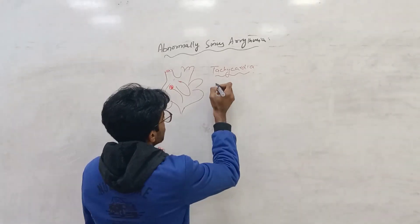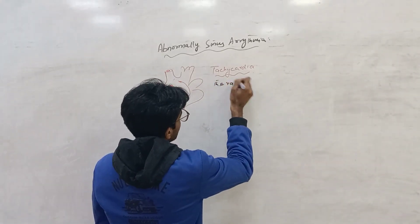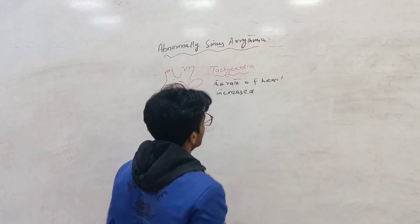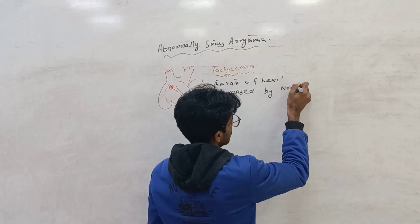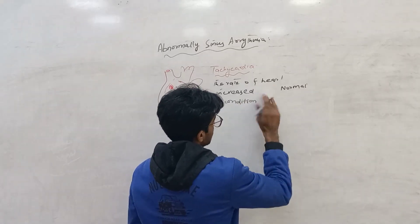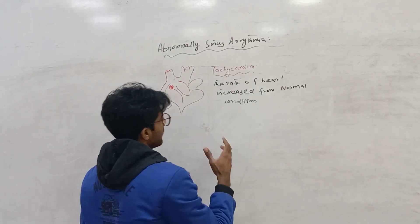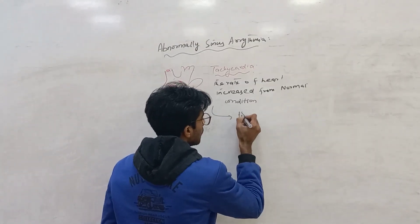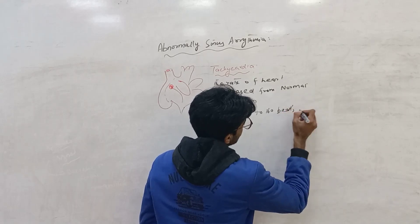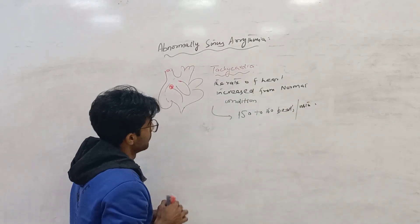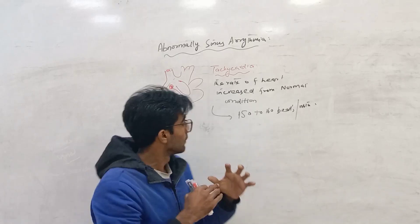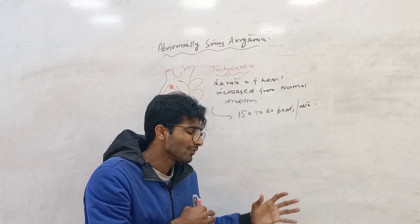In this condition, tachycardia happens. Tachycardia is when the rate of heartbeat increases from normal condition — approximately 150 to 160 beats per minute — due to the effect of the sinus node. Why does the sinus node produce a lot of heartbeats?